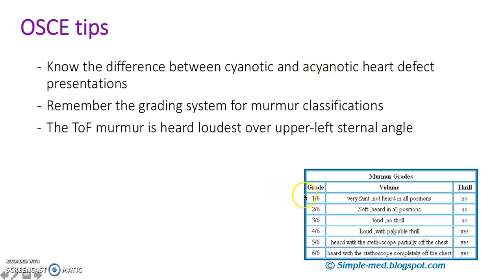Here are the murmurs — there are six in total. The first three have no thrill, and the last three have a thrill. Grade 1 is very faint, not heard in all positions, and you need to be very experienced to hear it. Grade 2 is soft and can be heard in all positions, but is still quite hard to hear. Grade 3 is loud but there's no thrill. Grade 4 is loud with a palpable thrill. Grade 5 is heard with a stethoscope partially off the chest, and there's a palpable thrill. Grade 6 is heard with a stethoscope completely off the chest, and there's a palpable thrill.